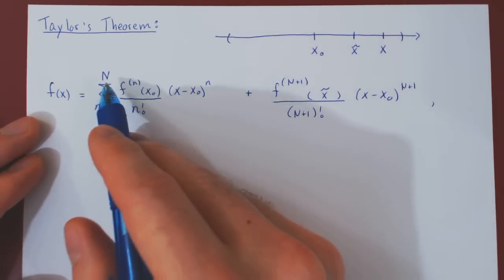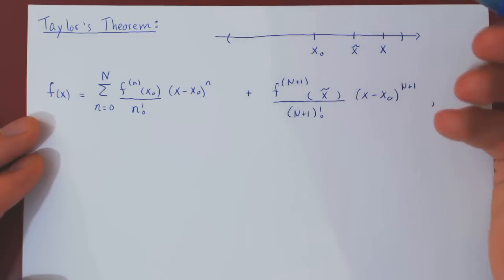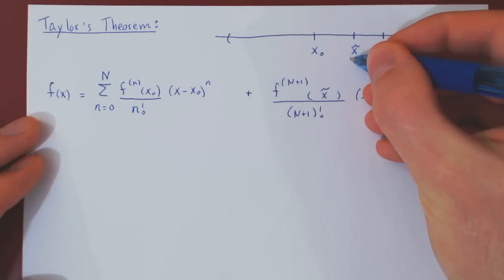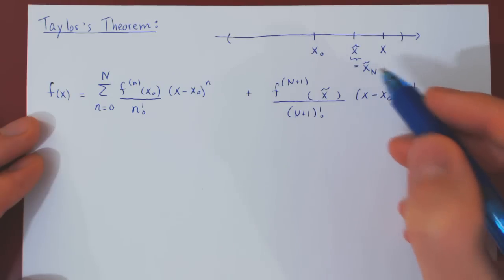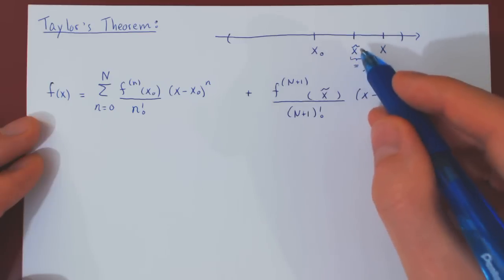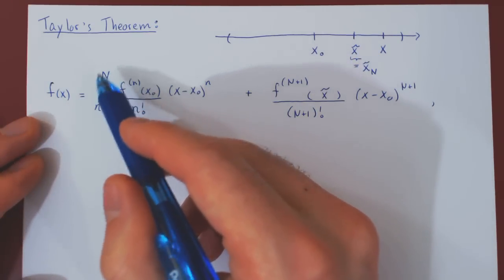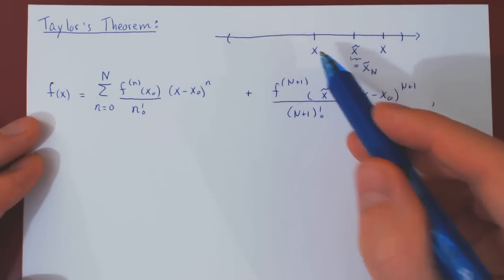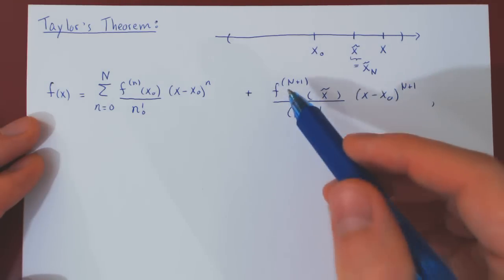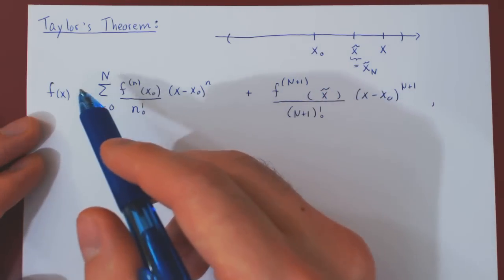Of course, as we take different values of n, we will take different values of x hat. So it is worth noting that x hat does depend on uppercase N. You could write x hat subscript uppercase N to emphasize this. But the key is that for any choice of n, we can find some value of x hat between x0 and x, such that if we evaluate the n plus 1 derivative at this point, then the equality is valid.